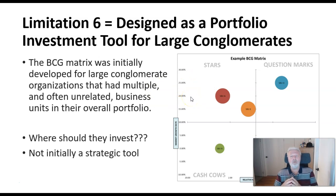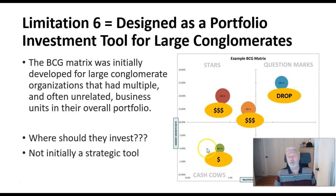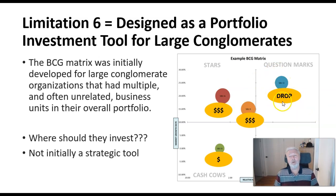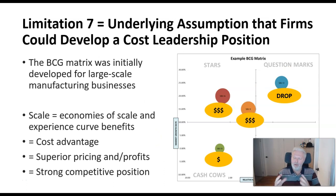Limitation six: as noted, this was designed as an investment allocation tool for large conglomerates, not a competitive strategy tool. The logic was: cash cows generate a lot of money, keep some reinvested, but most should go into stars — since stars are designed to become the long-term cash cows of the future. Question marks were often considered too expensive to maintain, as they need to catch up in market share and then hold that position.